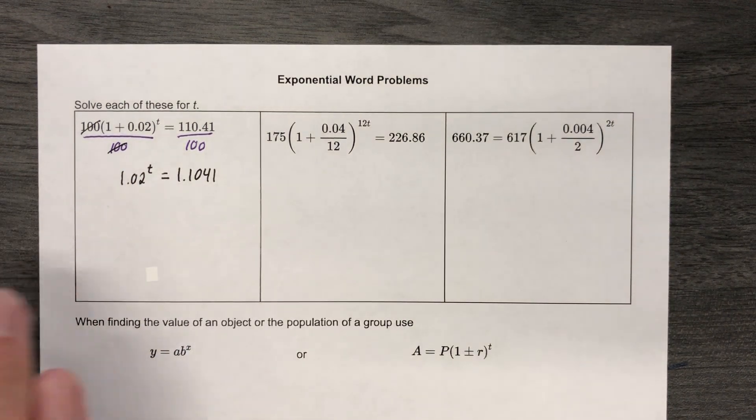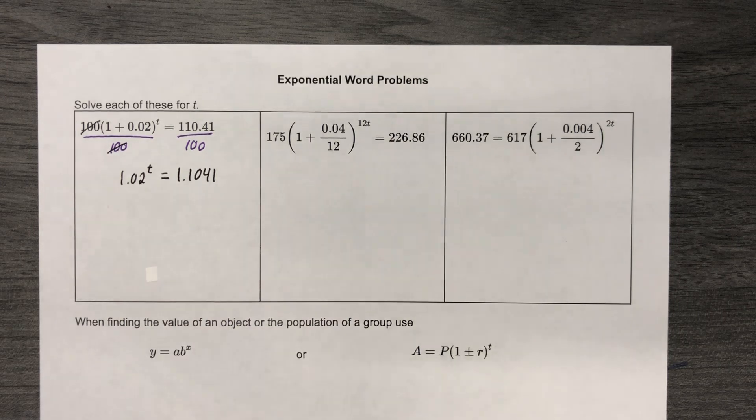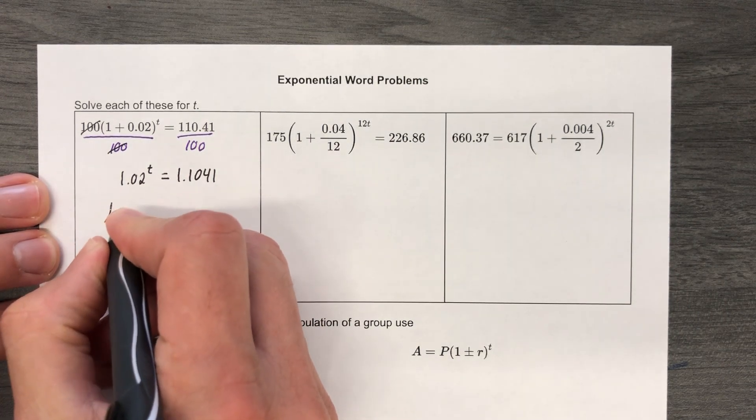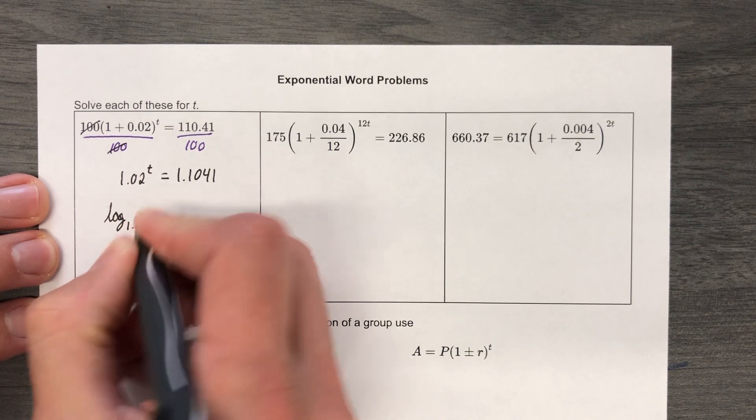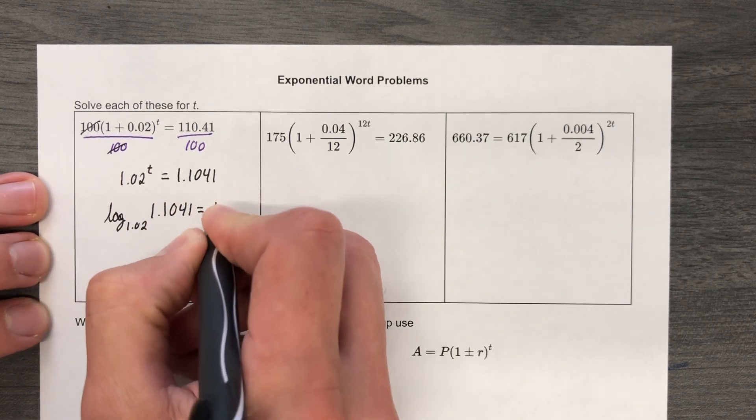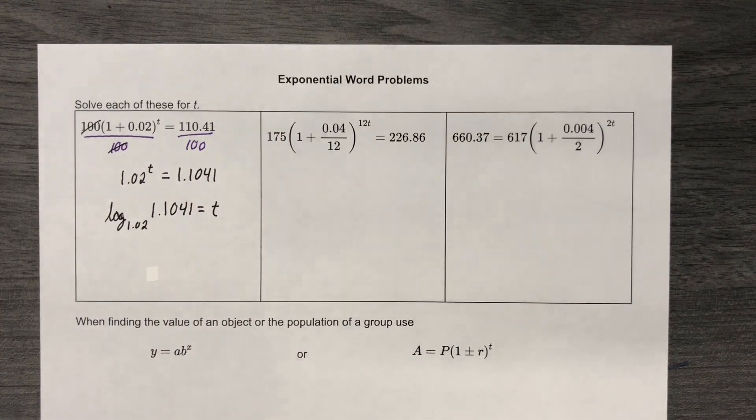Okay, at this point, we have something that is exponential. It has decimals in it. We're not used to seeing all that, but it does work. So rearrange it. You know how. Log base 1.02 of 1.1041, and that is equal to your exponent.